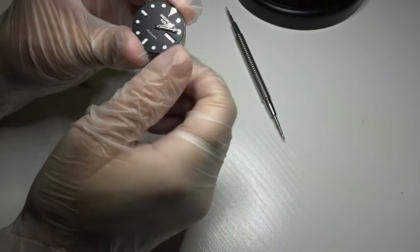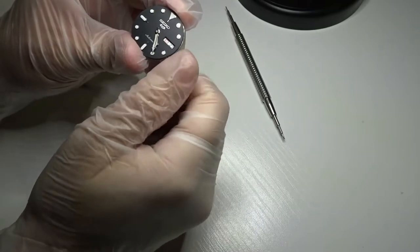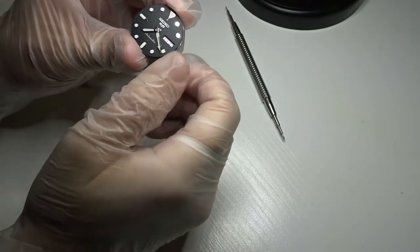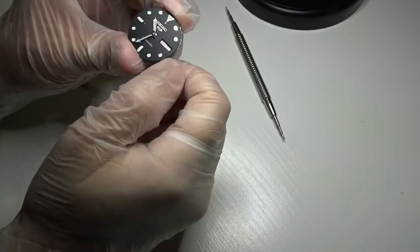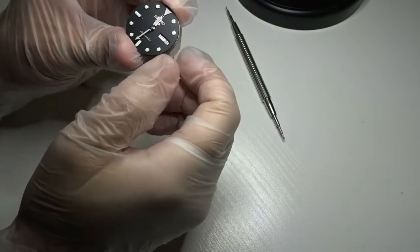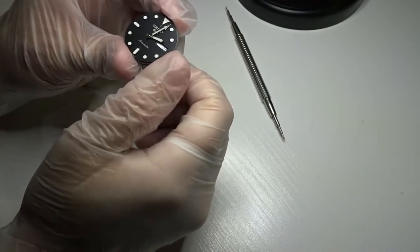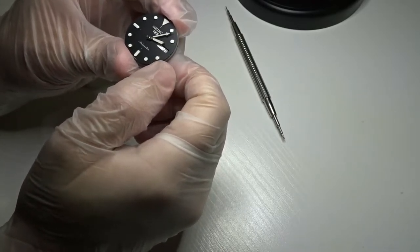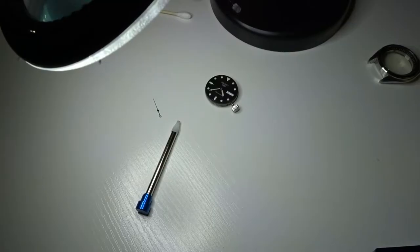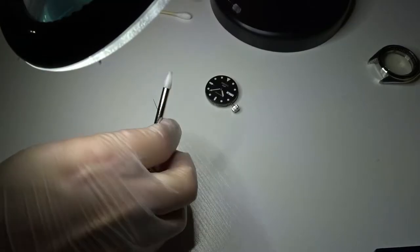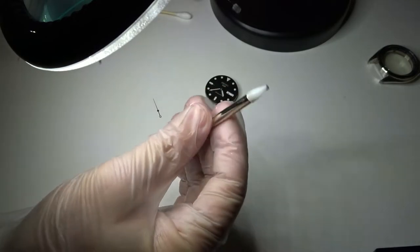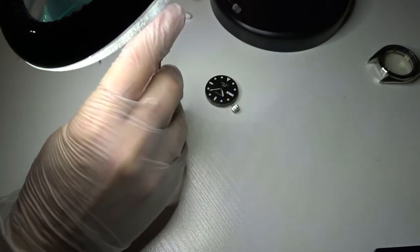Just want to check the clearance. Once you have, I don't know if you noticed but there was a problem there. Once the hands are on you want to check the clearance, not only with the hour hands making sure that they clear all the dial indices, but also the minute hand, that it's clearing the hour hand and they're not conflicting with each other.